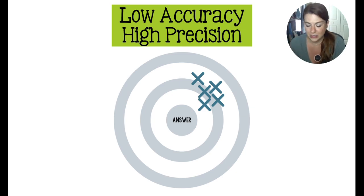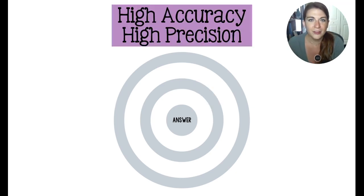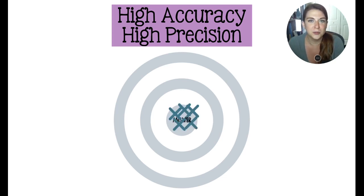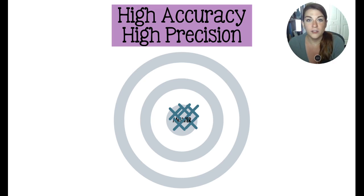That's super frustrating because you're doing it right, but you're not getting the answer you want. Last up, high accuracy and high precision — this is how you would want all your experimental results to turn out. Those are going to be really close to the target and really close to each other, indicating that your procedure and your methods are fantastic.